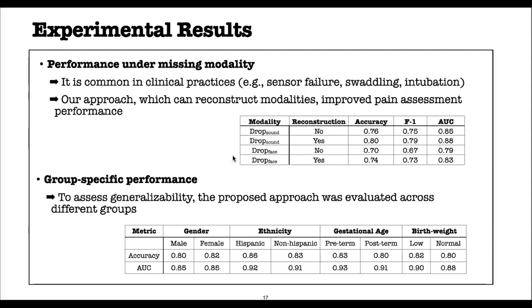To assess the importance of modality construction, we also performed an experiment reporting pain performance with and without modality construction. We can see that the performance of individual modalities improves when modality construction is applied. For example, the accuracy of the sound modality with construction is 80%, but without construction it is 76%. Similarly, if we drop the face completely and don't construct the face modality, performance is 70%; with face modality construction, performance is 74%.